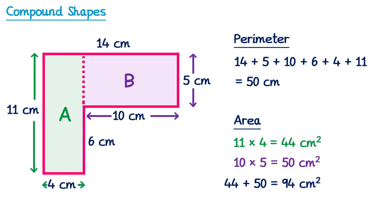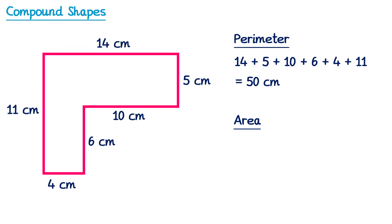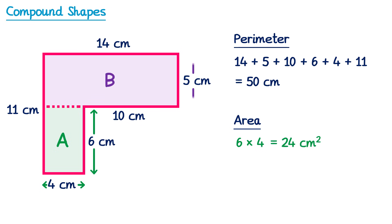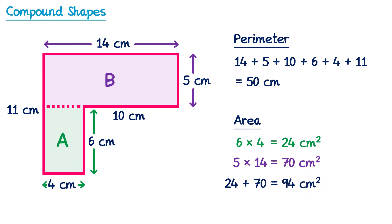You may have noticed that's not the only way we could have split the shape. It's also possible to split it with a horizontal dotted line, giving us slightly different rectangles — rectangle A and rectangle B. We multiply the height of rectangle A, which is 6, by its width, which is 4: 6 times 4 is 24. For rectangle B the height is 5 and the width is 14: 5 multiplied by 14 is 70. Adding 24 plus 70 gives us 94 centimeters squared — the same answer as before. So it doesn't matter how you split the shape, as long as you have the necessary information to calculate the areas.